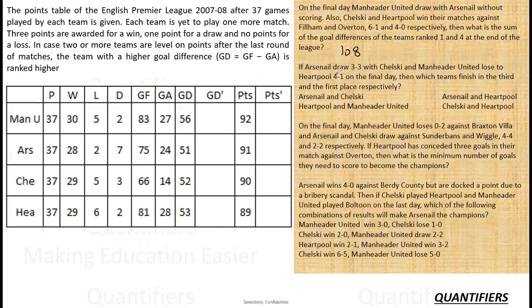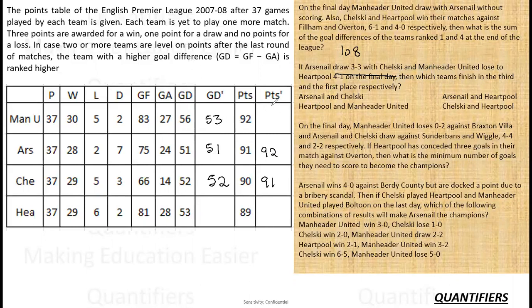For question 2: if Arsenal draw 3-3 with Chelsea, both have no goal difference improvement but their points increase by 1 each. Manchester United lose to Hartpool 4-1, so United's goal difference becomes 53 — they scored one goal and conceded four. Their points remain 92. Liverpool's goal difference increases by 3, becoming 56, and their points are 92. Liverpool finish first with the highest goal difference. Between Arsenal and Chelsea, Arsenal has better points, so Arsenal finishes third. The answer is the second option.